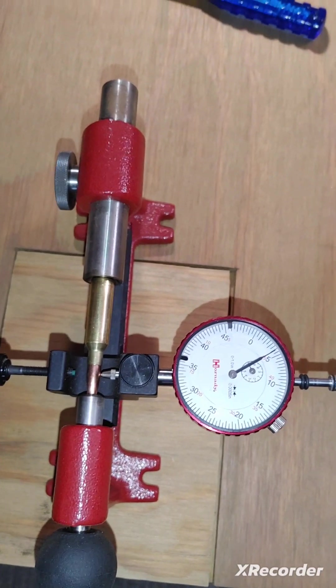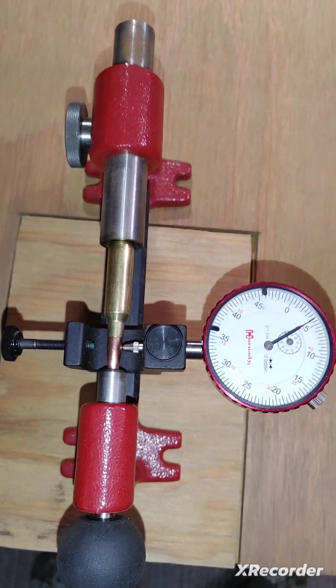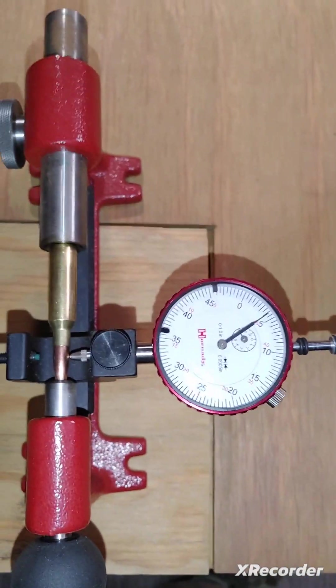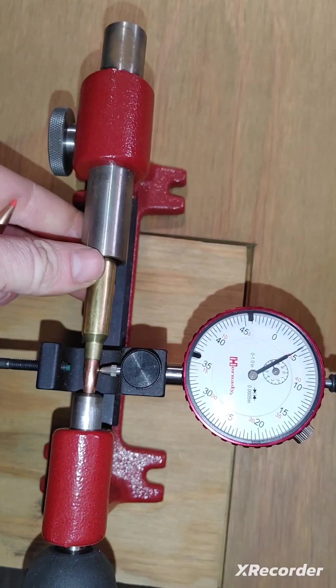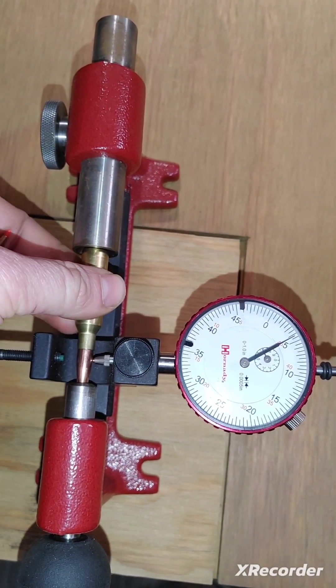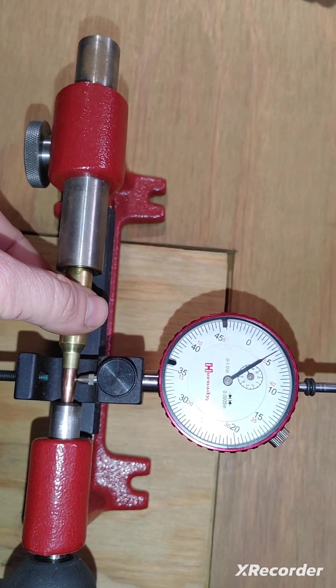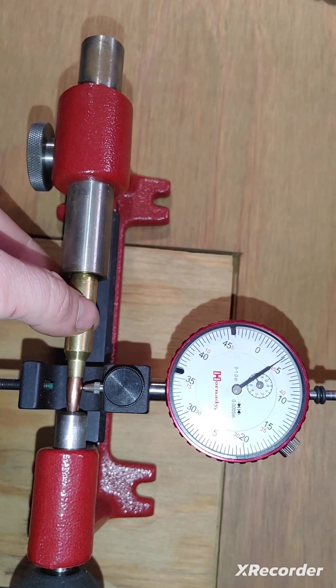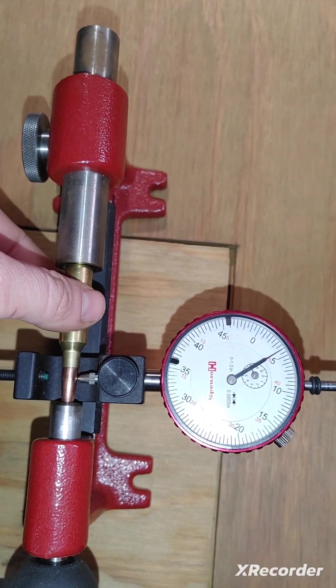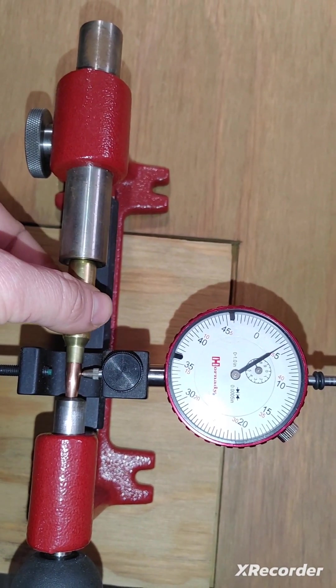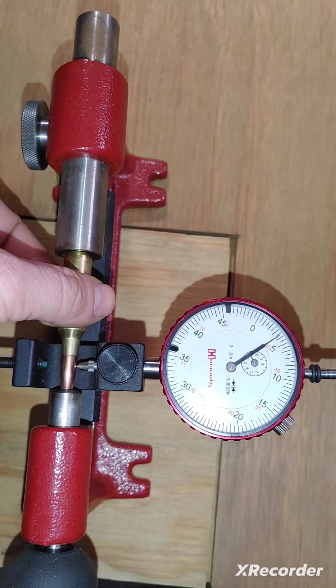So this also made by Hornaday is basically the same thing as this, but a cheaper version and doesn't allow you to do as many things. So this same thing measures your concentricity or your bullet runout. And you can see here, this is a bullet that I loaded myself, and you can see how much there is.